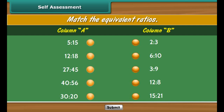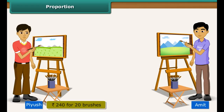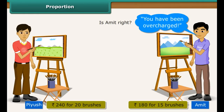Pyush bought 20 paint brushes for Rs. 240, and Amit bought 15 identical brushes for Rs. 180 from the same shop. Amit claims the shopkeeper overcharged Pyush. Let us verify. The ratio of quantities is 4 is to 3, and the ratio of prices is also 4 is to 3. The ratio of quantities equals the ratio of prices, so Amit's claim is wrong — the shopkeeper charged the same price for the brushes. When two ratios are equal, they are said to be in proportion.